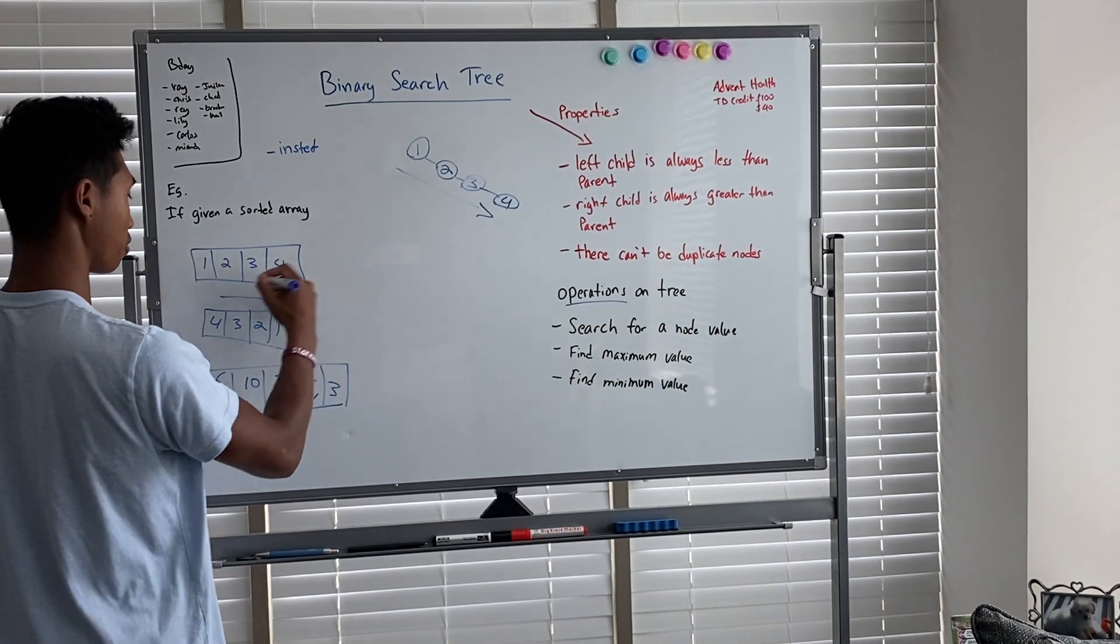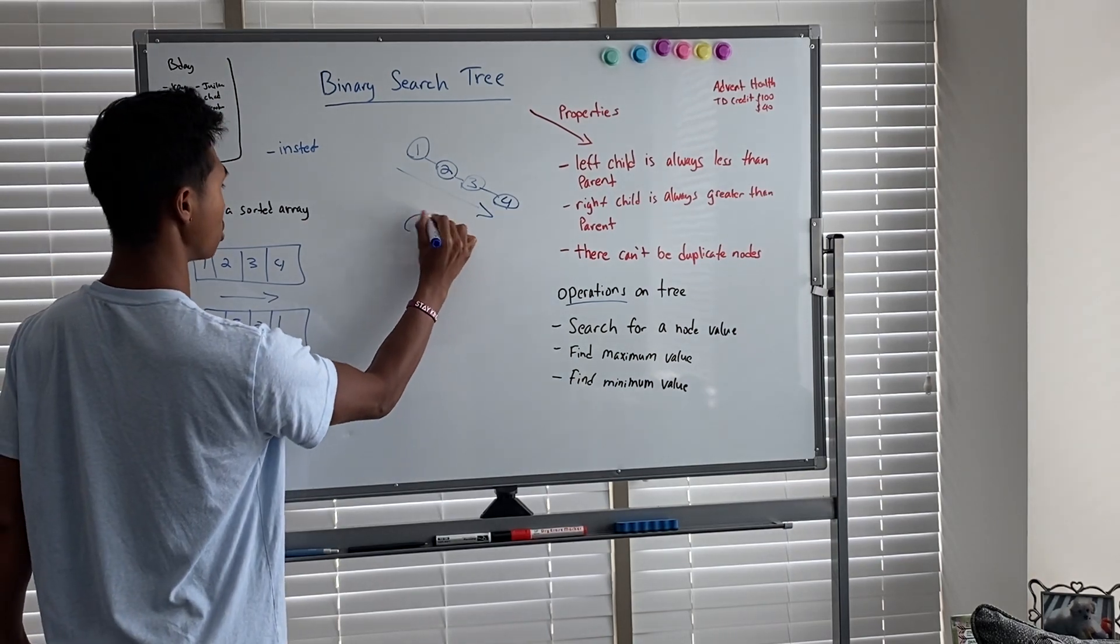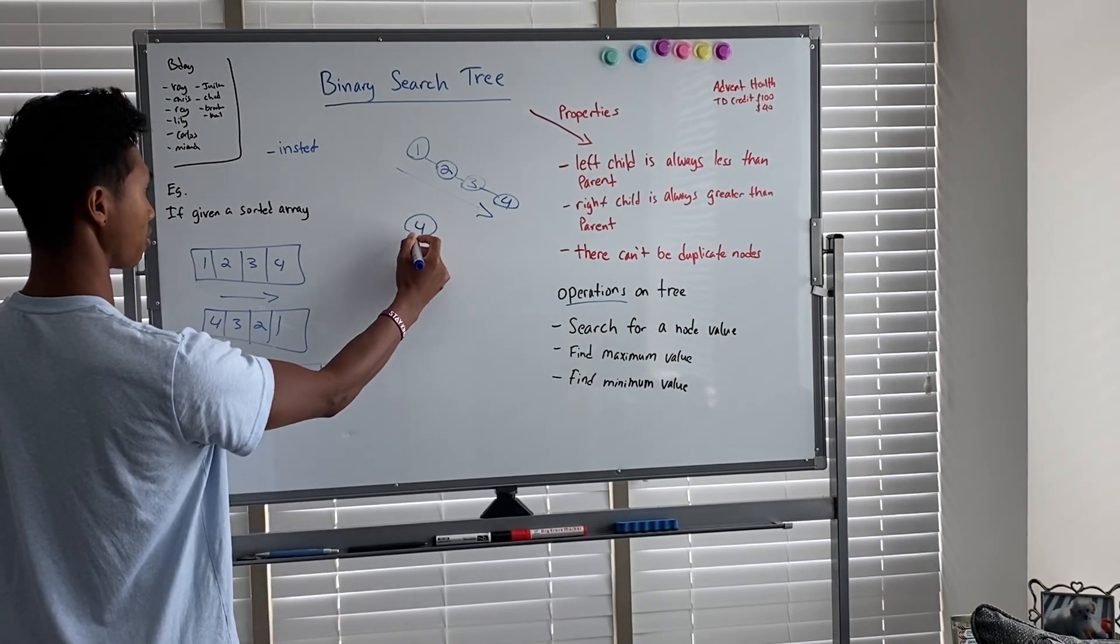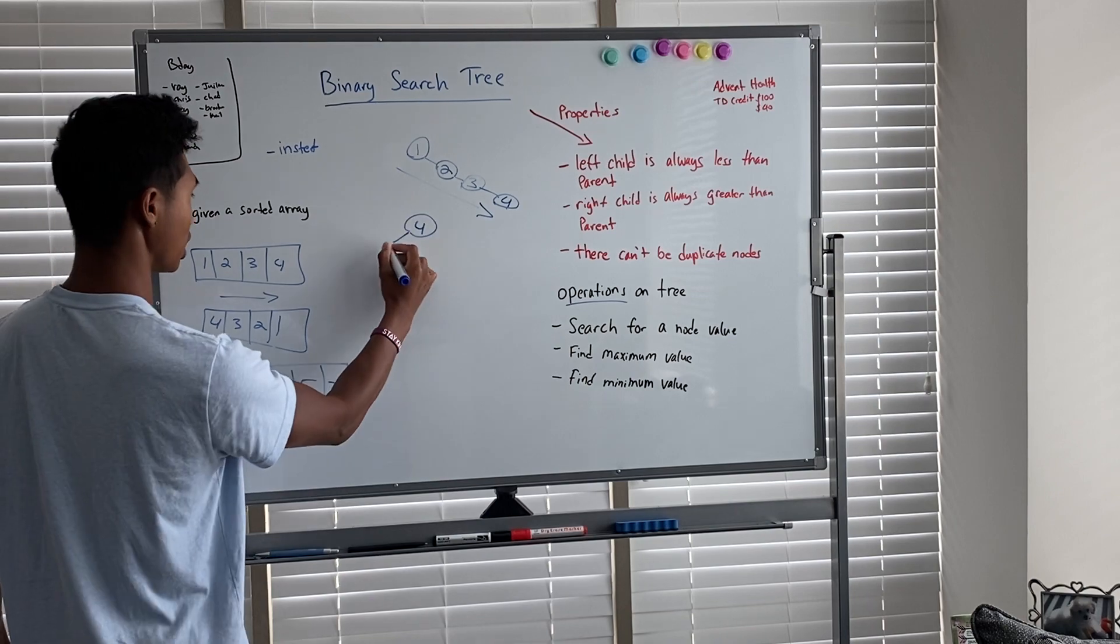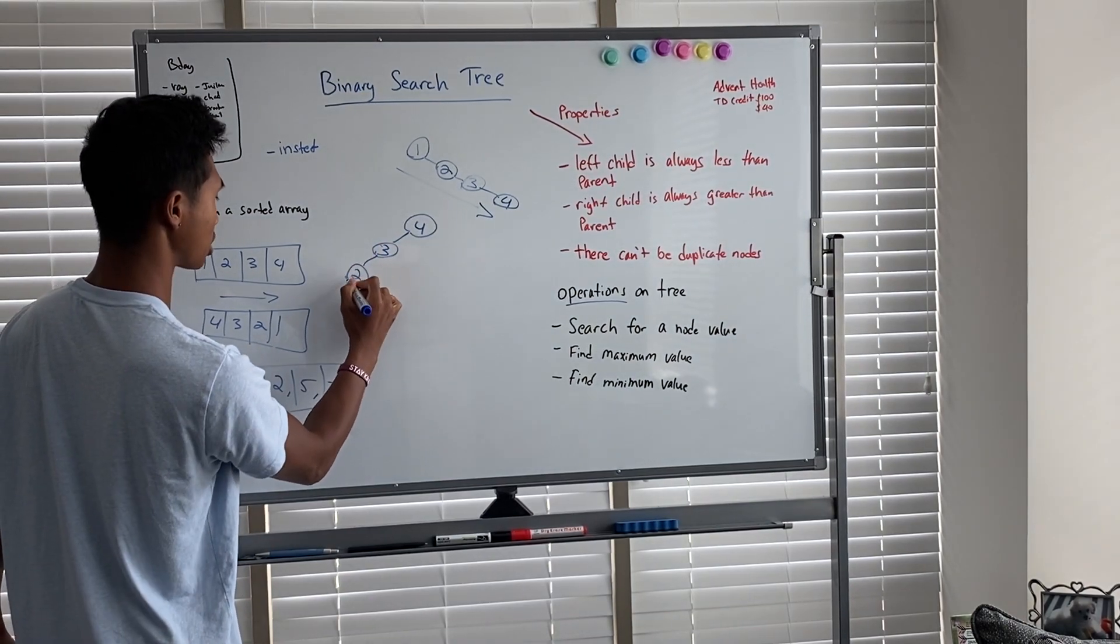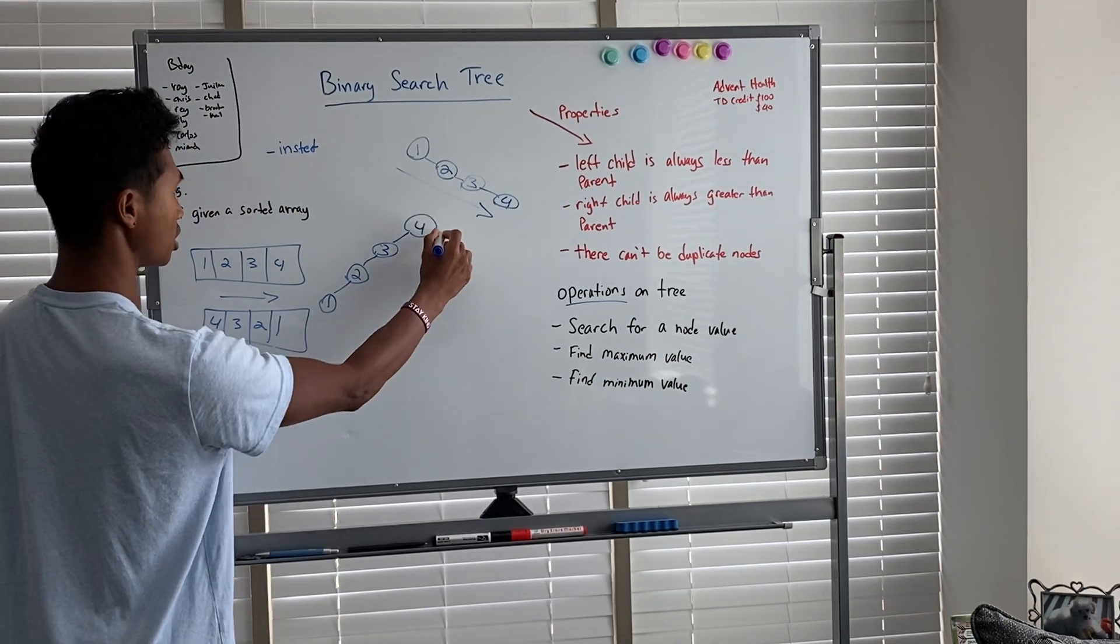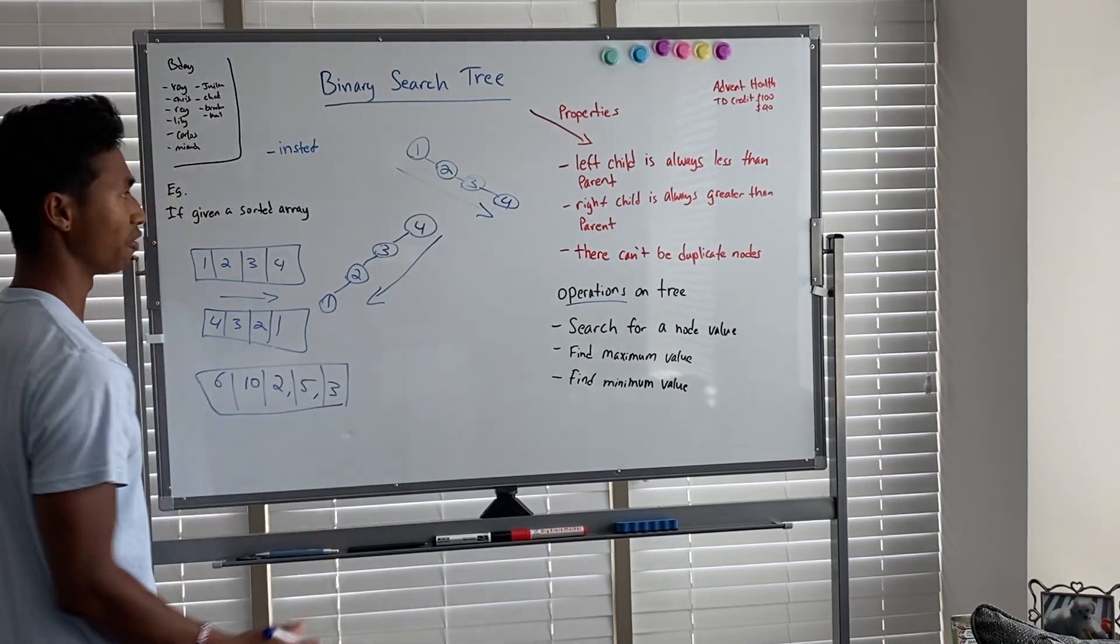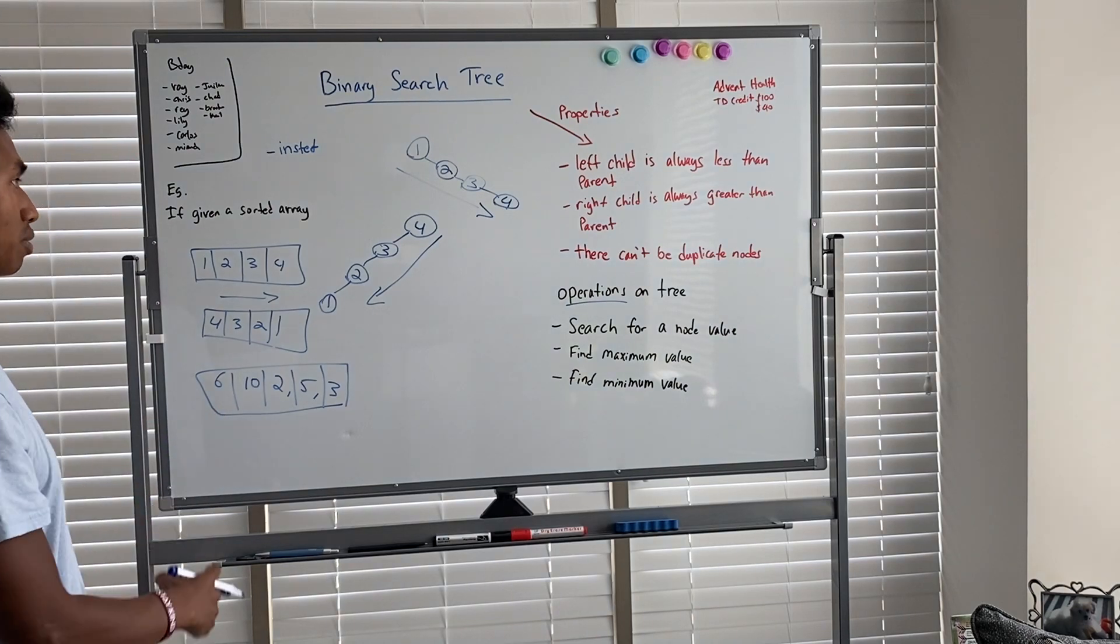Well, first you're going to start with four because four is going to be our root node. Three is less than four, so we're actually going to go left. And if you can see the pattern here, it's going to be the exact opposite. It's going to be going fully left recursive subtree.